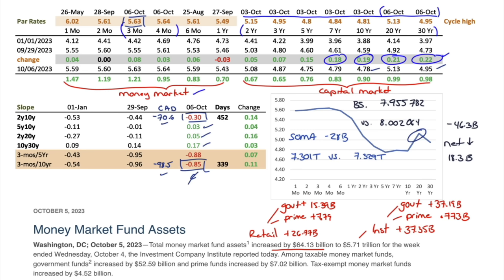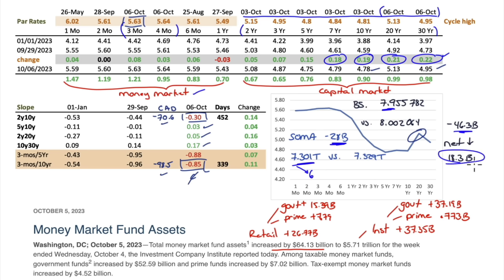The Fed balance sheet asset runoff is down another 28 billion, to 7.301 trillion. At the current rate of runoff, we should see a six-handle before the end of the year — under 7 trillion. The balance sheet itself is now under 8 trillion at 7.955, down 46 billion, with 28 billion of that being runoff and another net 18 billion dollar reduction.